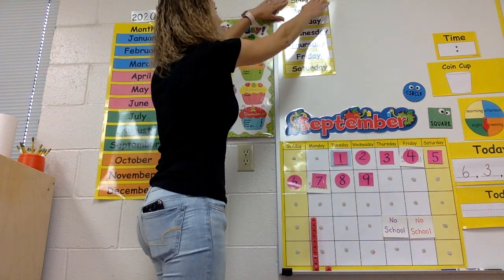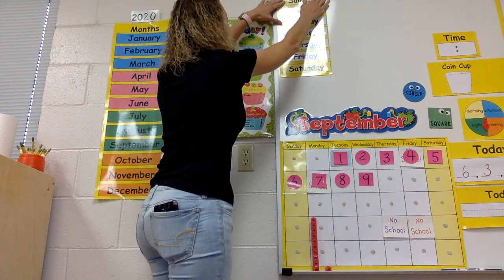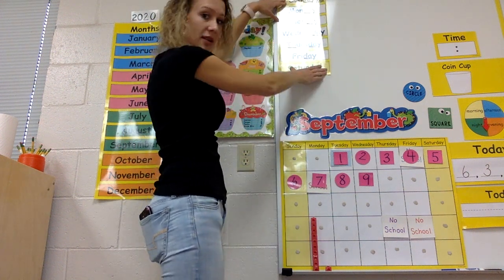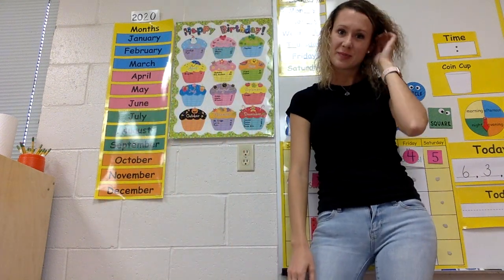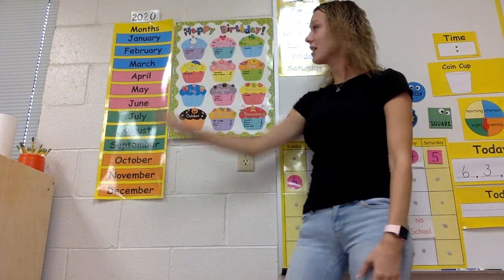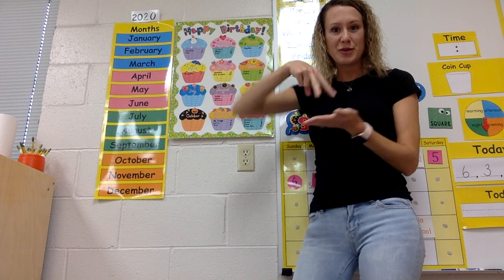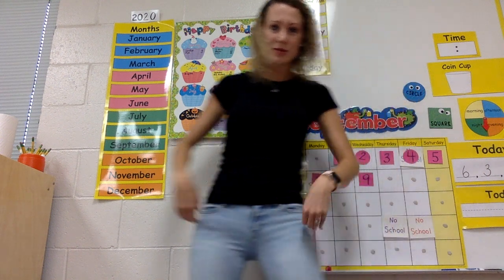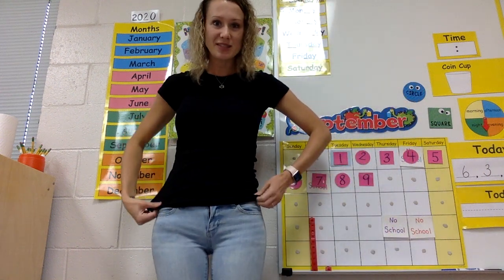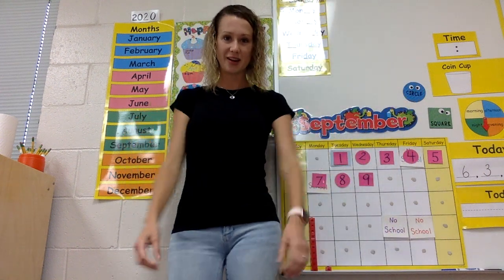Awesome, my sweets. How many months are there in a year? How many months in a year? There are 12. You can stand and we will sing. We'll do our dance for the months of the year song. Sing with me, here we go.